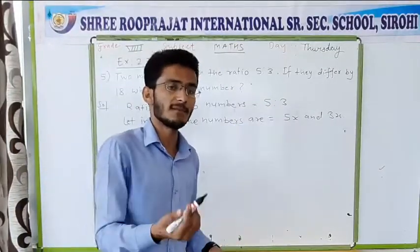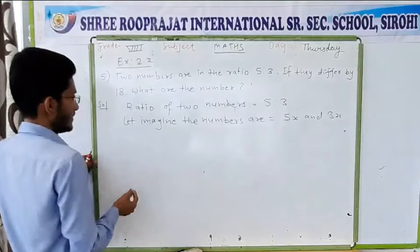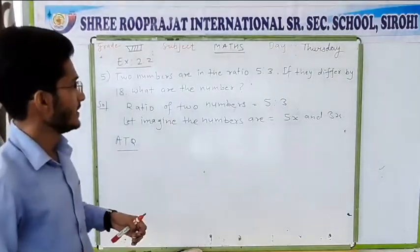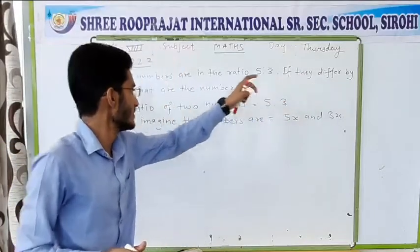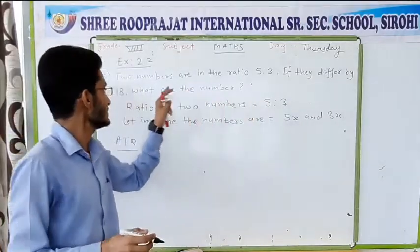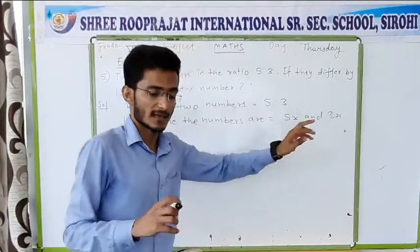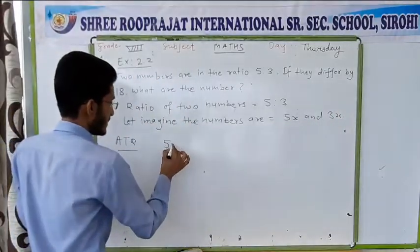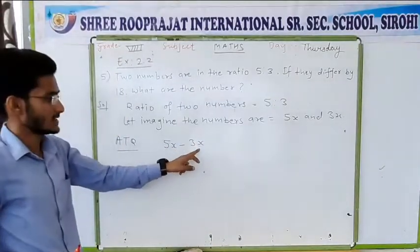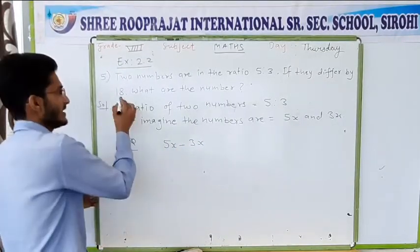So now these are the numbers: 5x and 3x. Talking about the second statement given in the question: it is given that they differ by 18. That means the difference between both numbers is 18. The numbers are 5x and 3x, where 3x is the smaller one and 5x is the greater one. So if we find the difference, we will get 18.